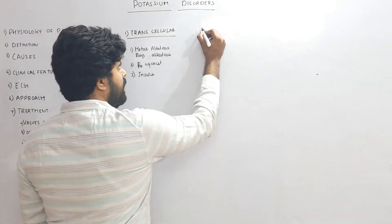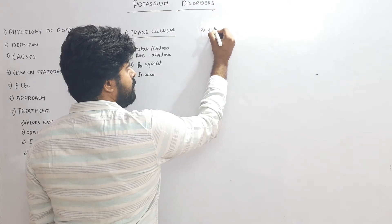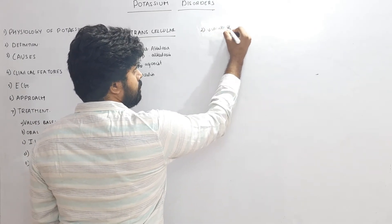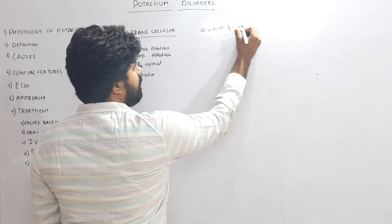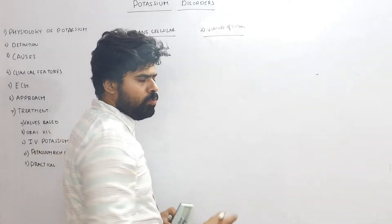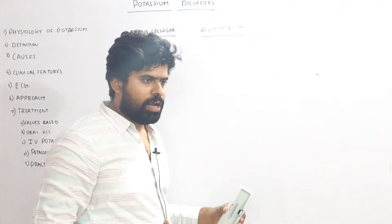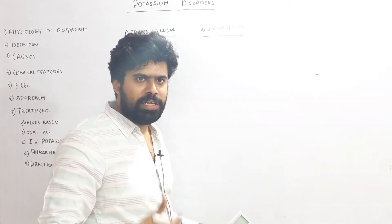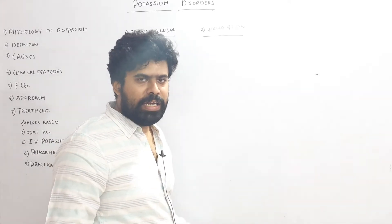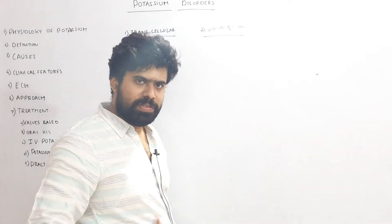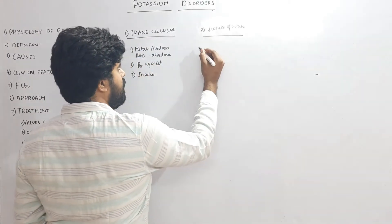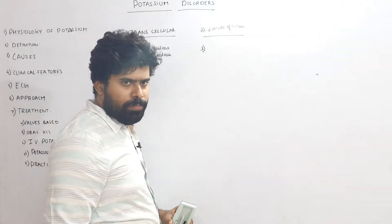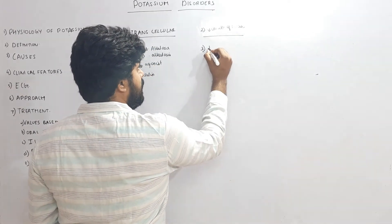The second group involves decreased intake of potassium. This can be secondary to malnutrition or administration of fluids without potassium — for example, continuously giving plain water or 5% dextrose. These patients can develop potassium deficiency.